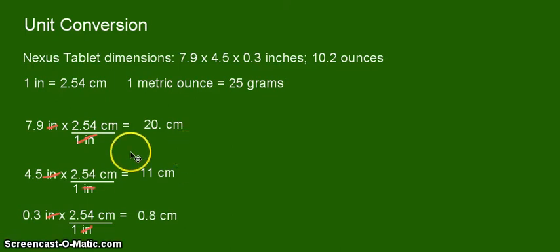All right so after doing the calculation these are our answers. 7.9 times 2.54 that's 20 centimeters, then 4.5 times 2.54 that's 11 centimeters, and 0.3 times 2.54 is 0.8 centimeters. So these are our new dimensions of the Nexus tablet.